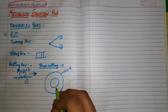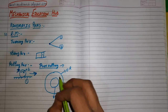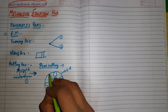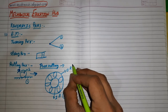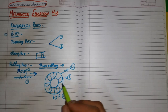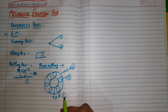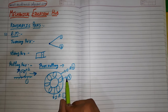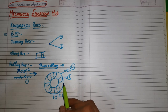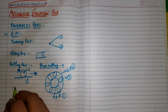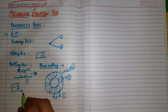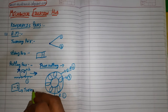Another example of a rolling pair is a ball bearing. Consider the inner race as link one, the outer race as link two, and the balls as link three. Link one (inner race) and link three (balls) form a rolling pair, and link three and link two (outer race) also form a rolling pair. However, if we consider link one and link two together in this bearing example, they form a turning pair.